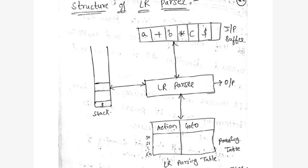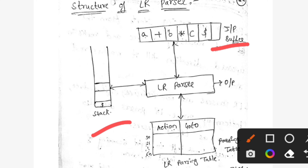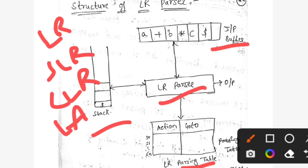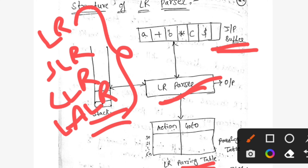Next we are going to discuss the structure of an LR parser. The structure consists of an input buffer, a stack, an LR parser, and an LR parsing table. In all four parsers — LR, SLR, CLR, and LALR — the stack, input buffer, and LR parser are the same. The only difference between them is the parsing table.